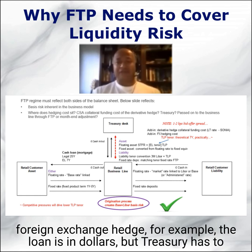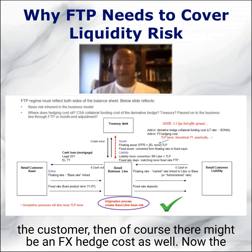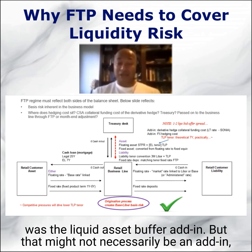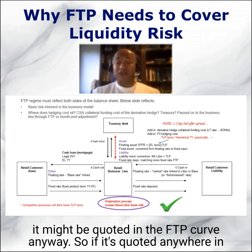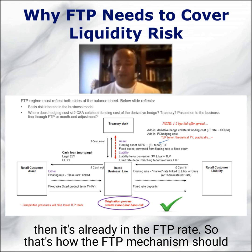And if it's a foreign exchange hedge — for example, the loan is in dollars, but Treasury has to borrow sterling to FX into dollars to lend via the business line to the customer — then of course there might be an FX hedge cost as well. The other add-in is the liquid asset buffer add-in, but that might not necessarily be an add-in; it might be quoted in the FTP curve anyway. So if it's quoted in your FTP curve — it's one of those four components shown earlier — then it's already in the FTP rate.